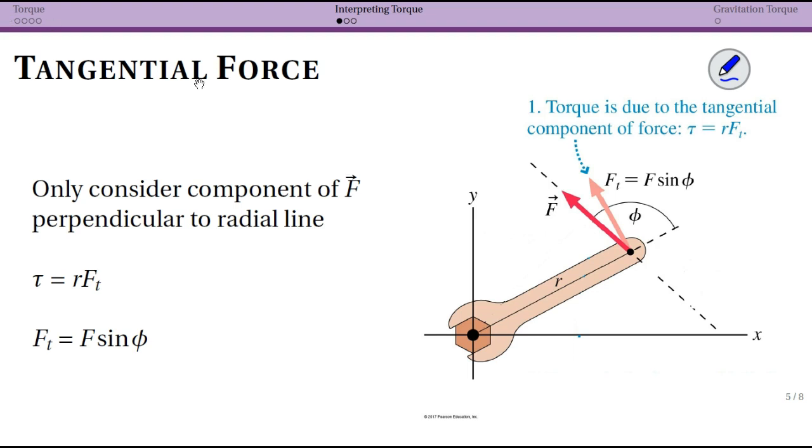So the first interpretation is the idea of tangential force. We have some radial direction and we're applying a force, but we only are concerned with the component of the force that is perpendicular to the radial line.